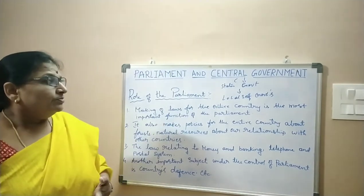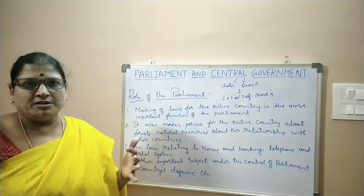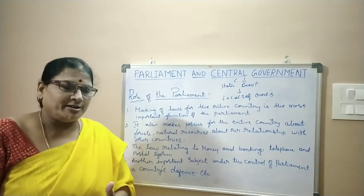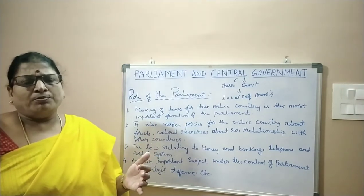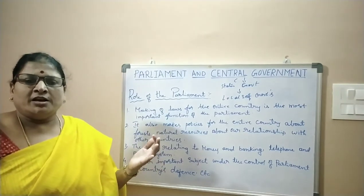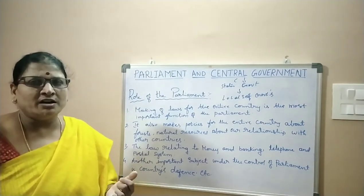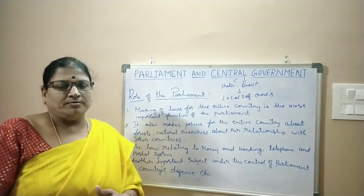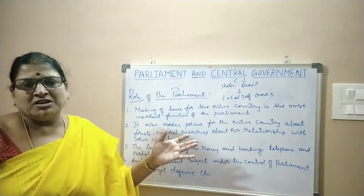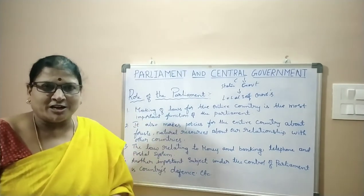Coming to parliamentary form of government: the prime minister is the real head and his cabinet ministers along with the prime minister will rule the nation. How is this prime minister elected? The people who have attained the voting age — that is earlier it was 21 years, now it has been made 18 years — that is adult franchise. Through adult franchise, these representatives are elected. First let us know how these elections are conducted.